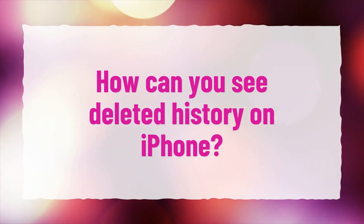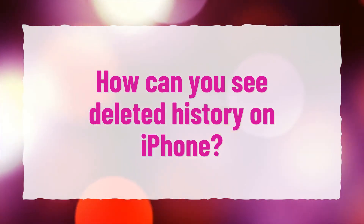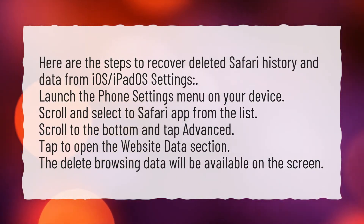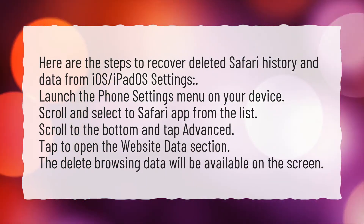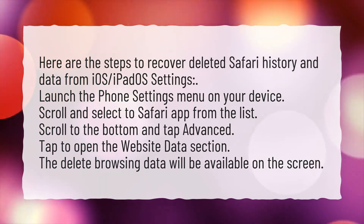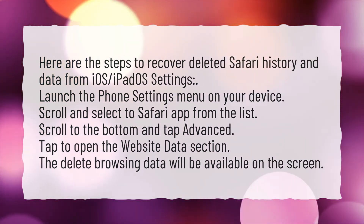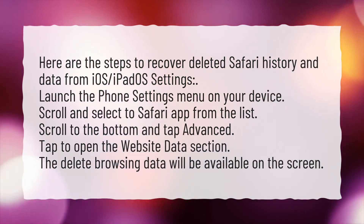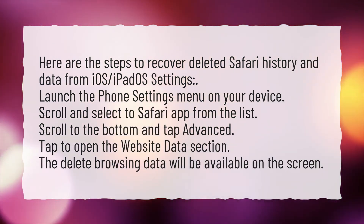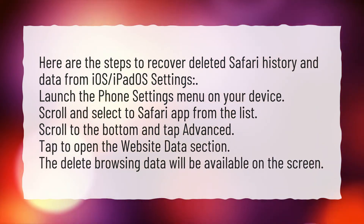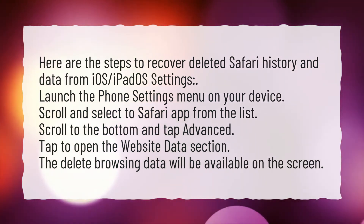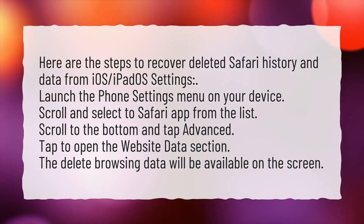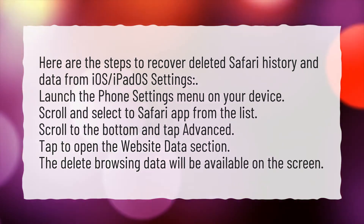How can you see deleted history on iPhone? Here are the steps to recover deleted Safari history and data from iOS and iPadOS settings. Launch the phone settings menu on your device. Scroll and select the Safari app from the list. Scroll to the bottom and tap Advanced. Tap to open the website data section. The delete browsing data option will be available on the screen.